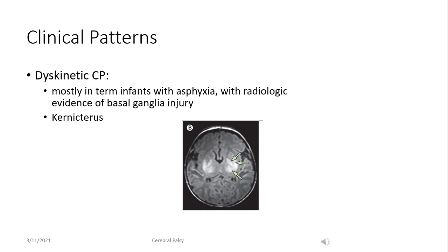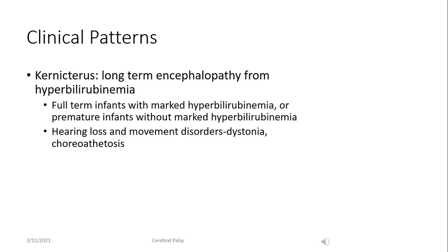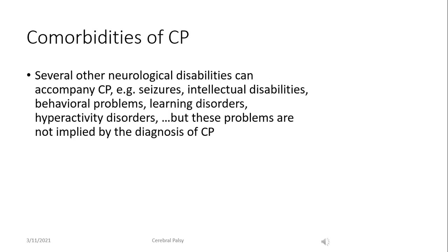The dyskinetic form of cerebral palsy is mostly seen in term infants with severe asphyxia, but is also seen in kernicterus. Kernicterus is the long-term sequela and encephalopathy from severe neonatal hyperbilirubinemia, and is usually a combination of the dystonic or dyskinetic form of cerebral palsy associated with hearing loss and loss of upgaze. While children with cerebral palsy may have associated neurological disabilities such as seizures and intellectual disabilities, these are not necessarily present, but these children should be evaluated for the presence of these comorbidities.